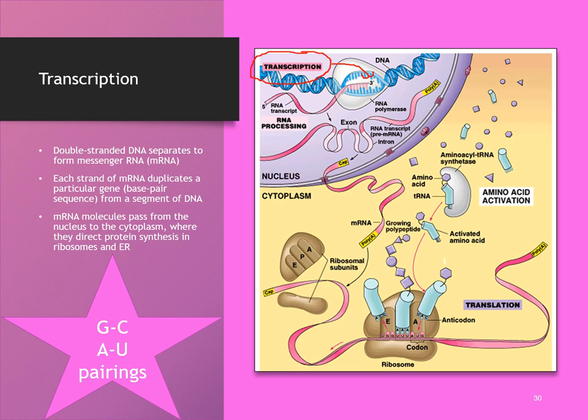In RNA coding, base pairings do not include thymine. Guanine still matches with cytosine. However, if mRNA encounters adenine in the DNA, it will create a complementary base pair of uracil. If it encounters thymine in the DNA, it will create a complementary base pairing of adenine.